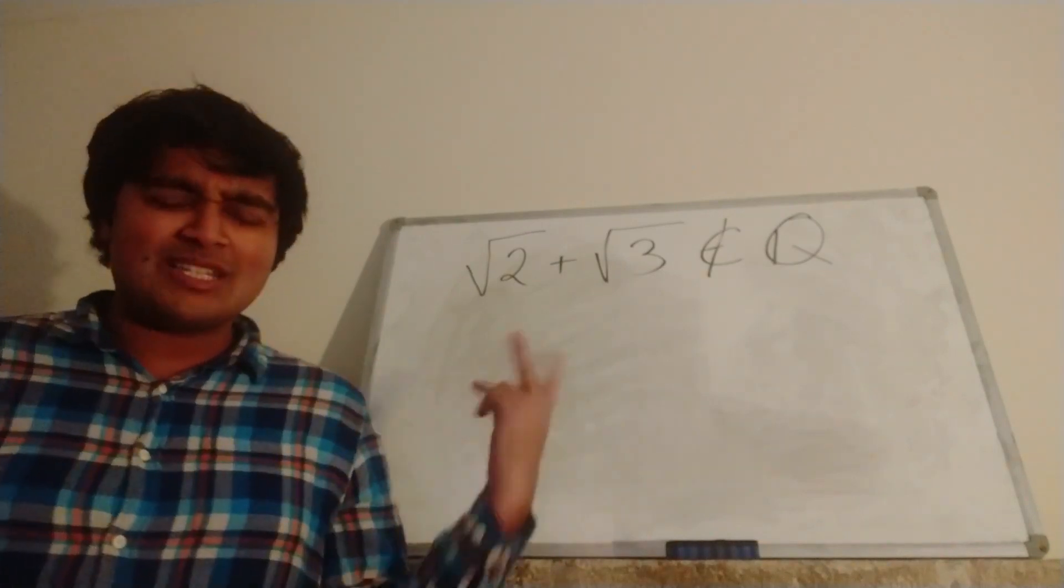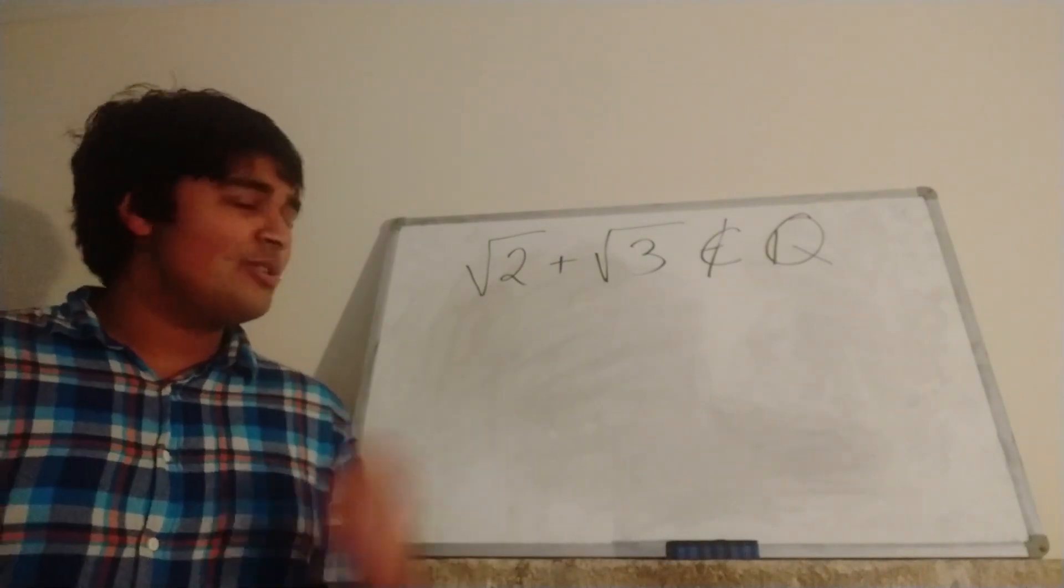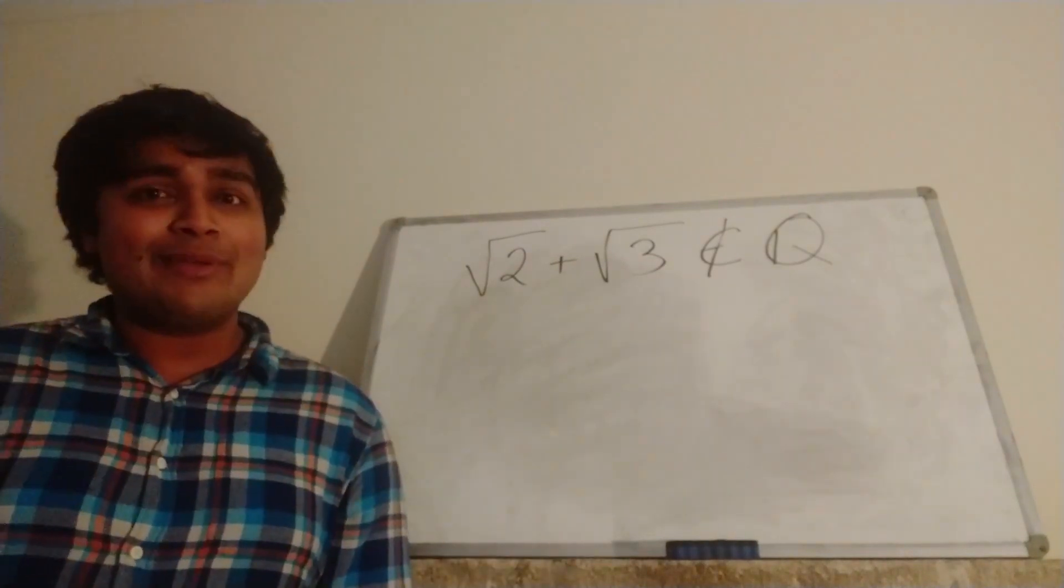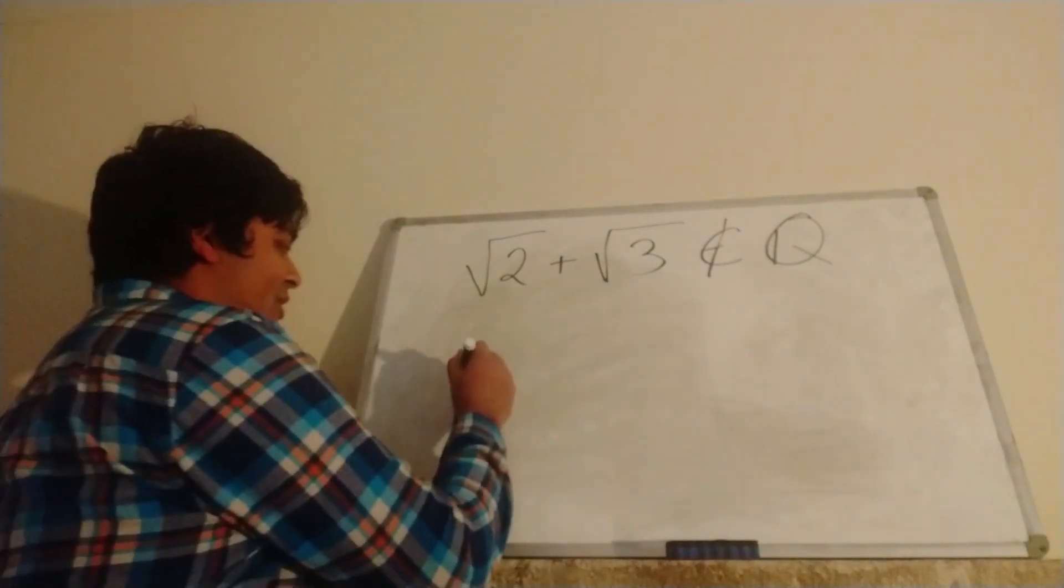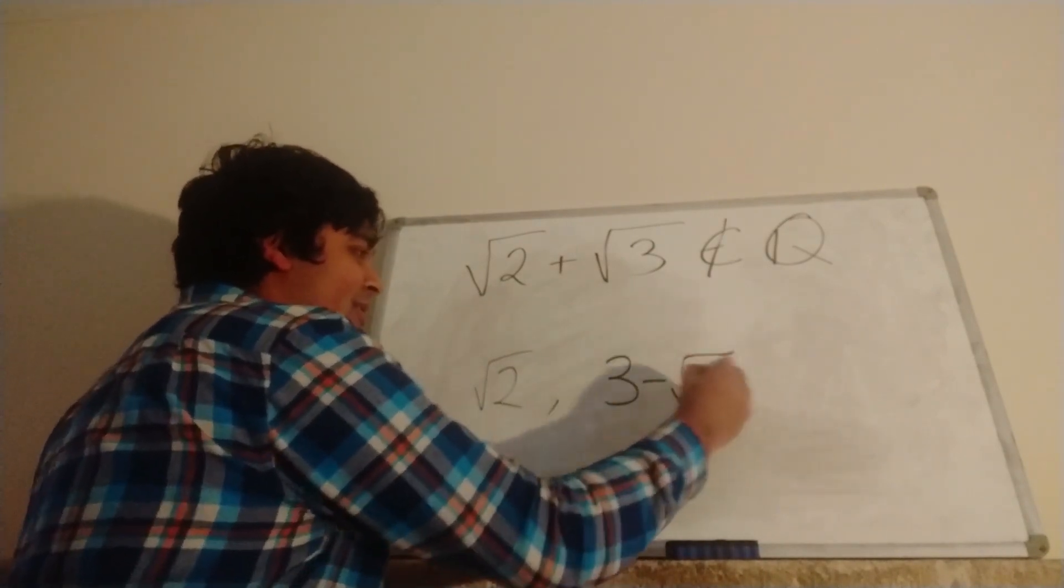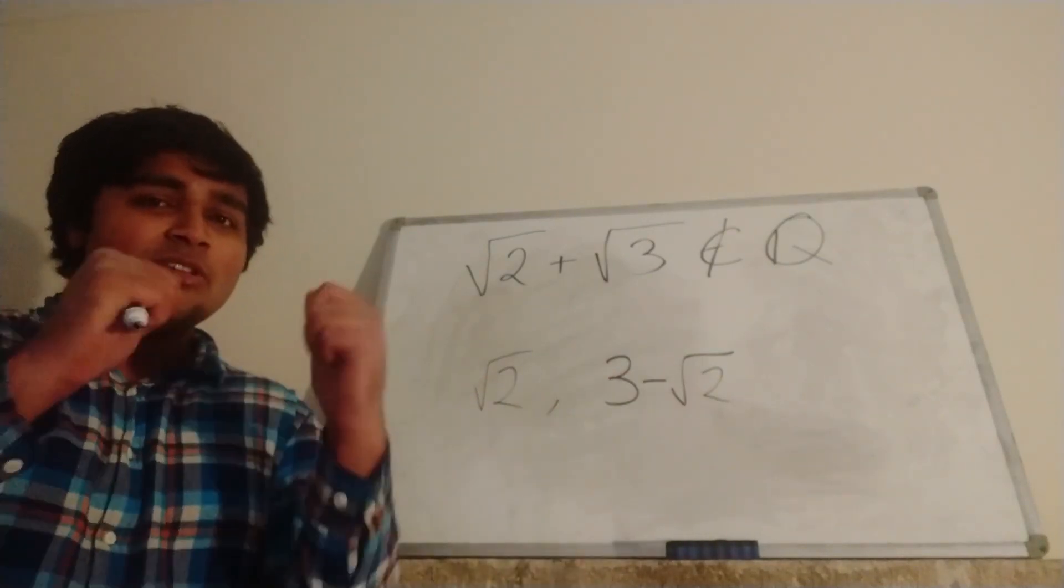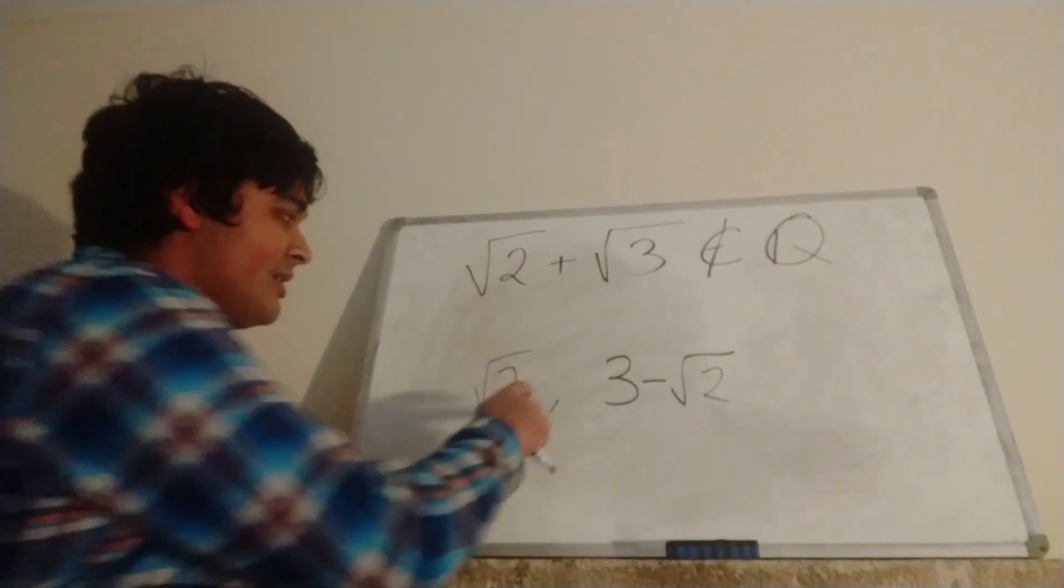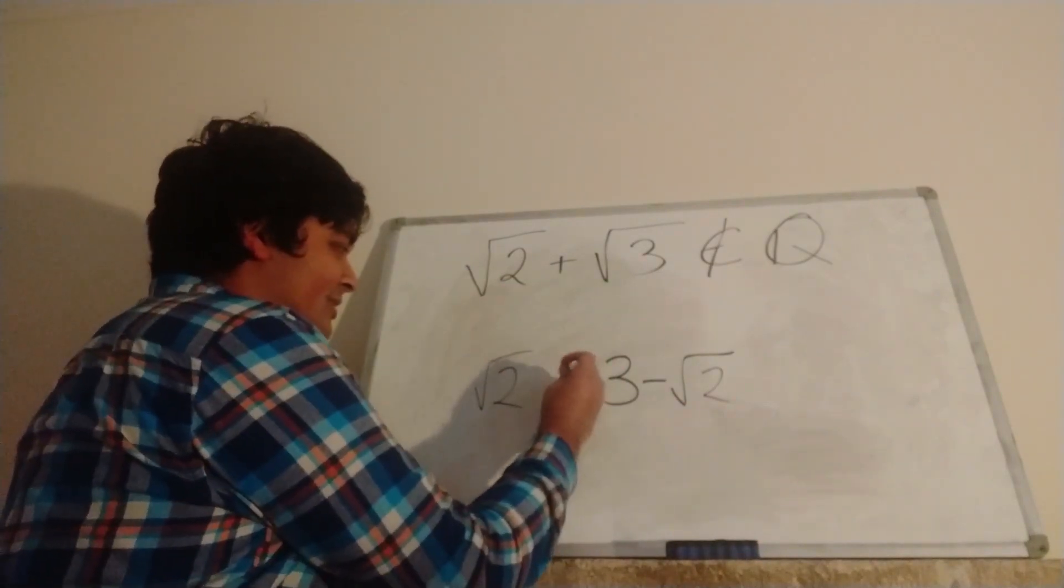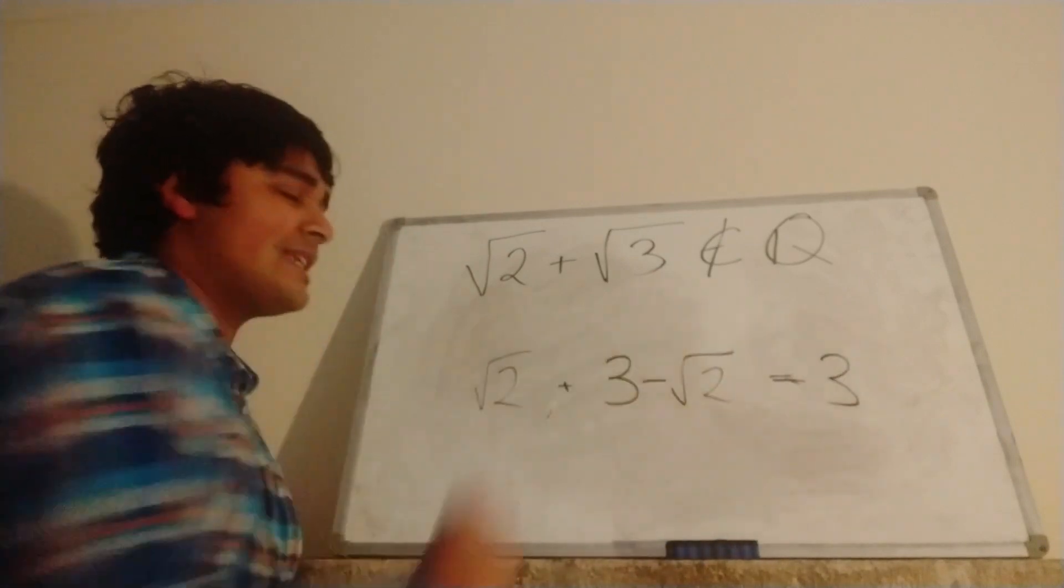And now you might go, well, we're just summing two irrational numbers, so surely the result is irrational, but we can't just use that logic. And a great way to see why we can't use that logic is if you look at √2, √2 is irrational, and if you look at 3 - √2, that's also irrational, because 3 is rational and √2 is irrational, so the difference is going to be irrational. But then when we add them up, an irrational plus an irrational, we're going to get 3, and of course that's rational.